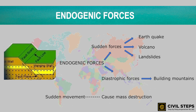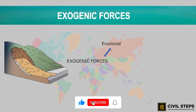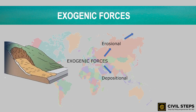Sudden movements like earthquakes and volcanoes can cause mass destruction on the surface of the earth. Exogenic forces comprise erosional and depositional processes, which further include the river, the wind, sea waves, and glaciers. This covers the lithospheric plates and the various forces responsible for their movement.